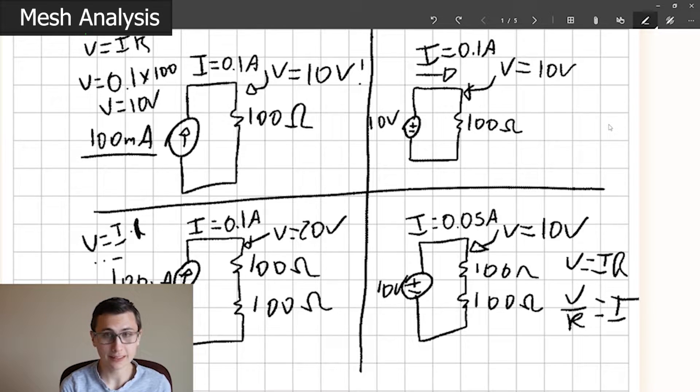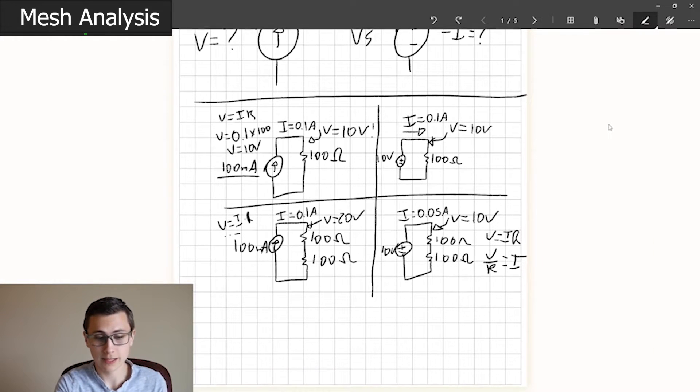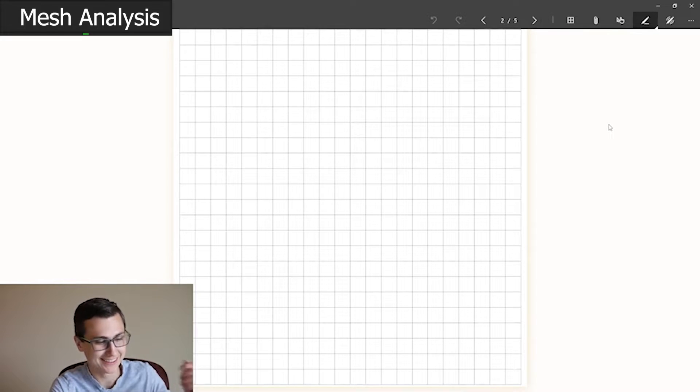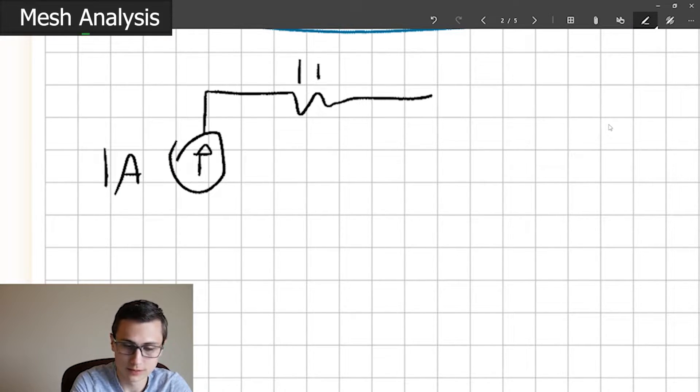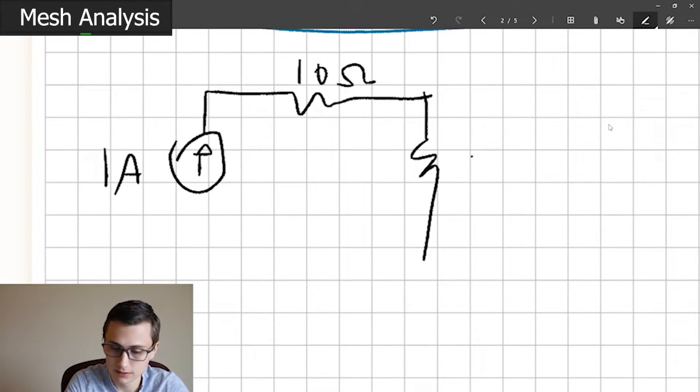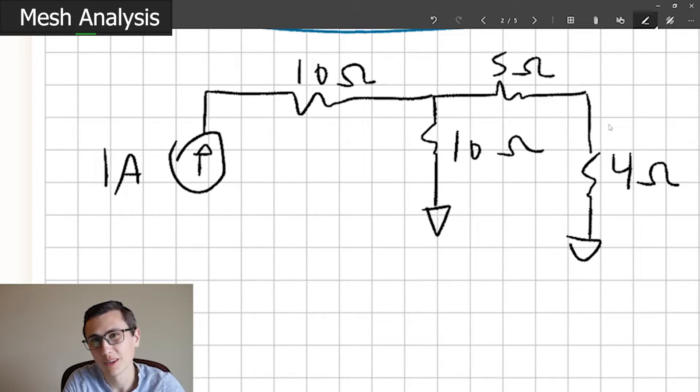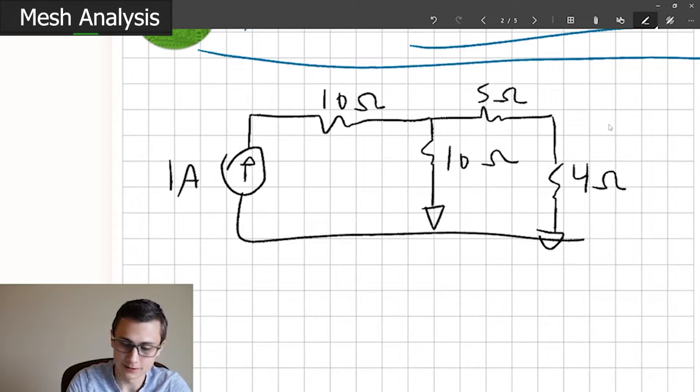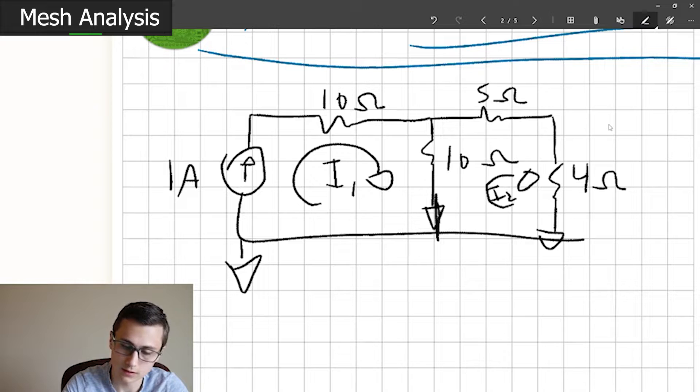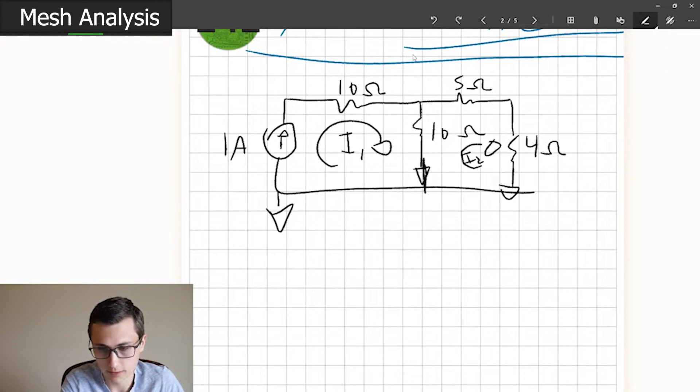So that's kind of the concept here. I suppose we could leave this video here, but I think there's more that we can do. And I want to use this current source as a mechanism to finally solve a problem using mesh analysis. Let's do 10 ohm. And then we'll do, let's do a 10 ohm. And then like a five ohm. And then like four ohm. Should I make the math hard? Should I make the math easy? I'll make it a little harder.